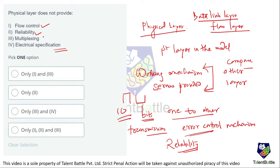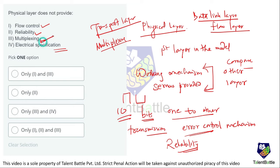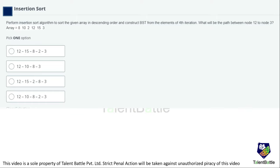Multiplexing is mostly performed by the transport layer, so the physical layer does not provide multiplexing either. The physical layer does NOT provide flow control, reliability, or multiplexing — only electrical specifications are provided due to bit transmission. Mapping to the options, options one, two, and three apply, so the last option (all of the above except electrical specification) is the answer.